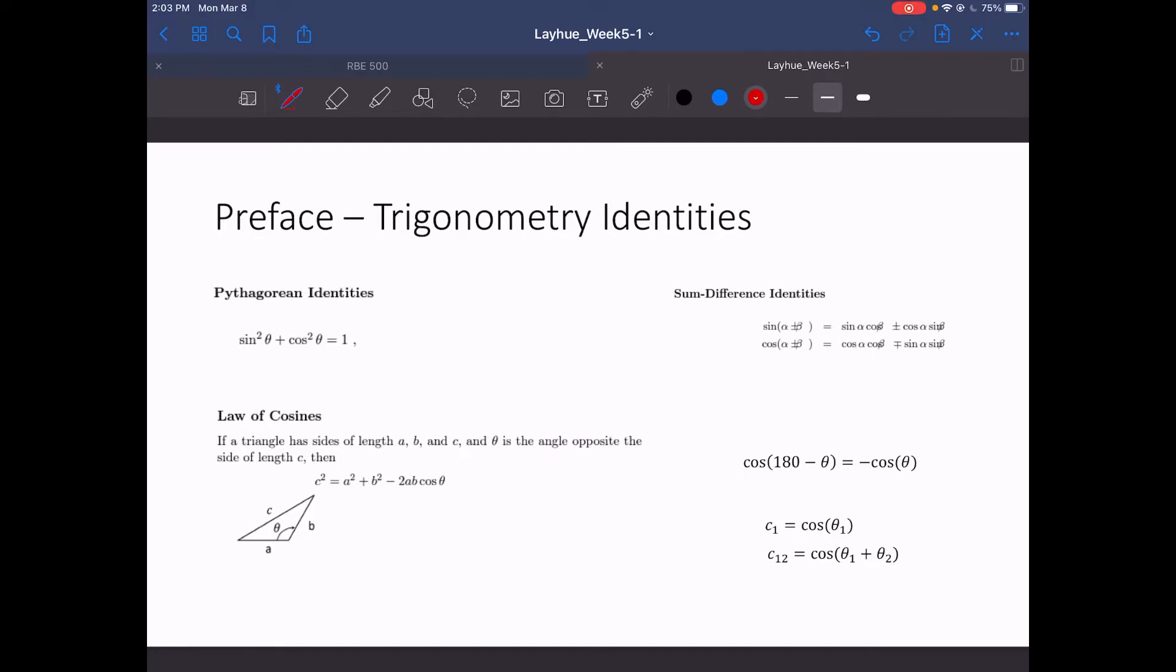One thing I would also like to note is notation. So here in the bottom right corner, later on I will use a notation such that c1 equals cosine of theta1 and c12 equals cosine theta1 plus theta2. This will translate similarly for sine as well. This is one thing to note because it can be confusing with the c that is denoted for law of cosines.